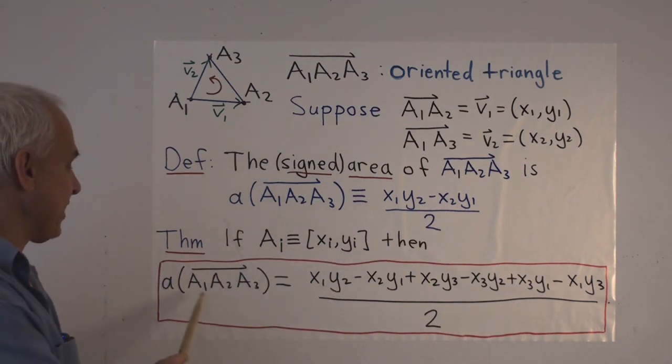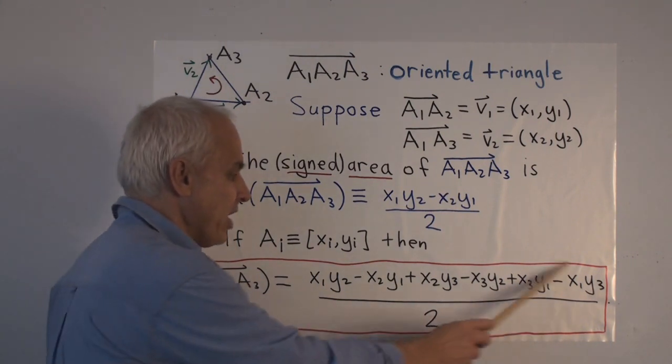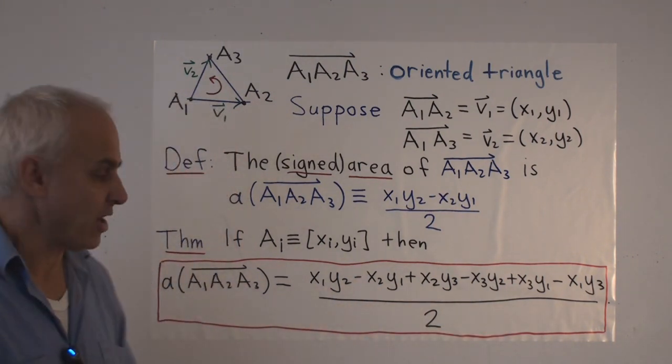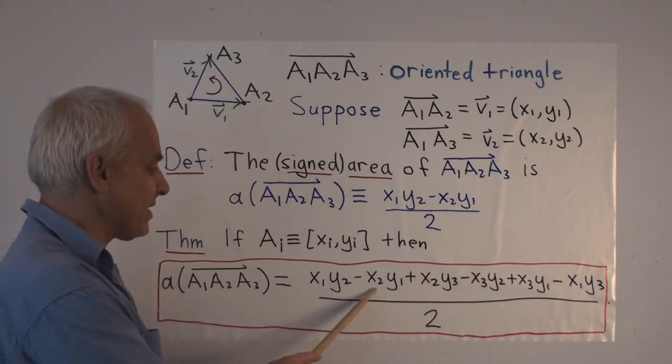Then the theory is that this area that we've just defined up here turns out to be this expression. It's got six terms, they alternate plus and minus. X1, Y2, minus X2, Y1, those naturally go together.